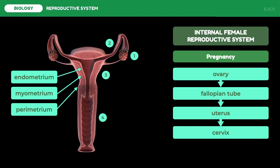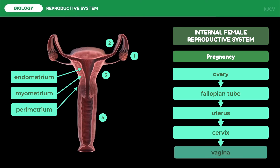The last organ of the internal female reproductive system is the vagina. It is an elastic muscular canal that connects the external reproductive system to the cervix. The primary function of the vagina is for sexual intercourse or coitus — it receives the penis and sperm during sexual intercourse, passes blood during menstruation, and is the passageway of the baby during delivery, hence it is also called the birth canal. When considering female sterilization or permanent contraception, the fallopian tube is tied to prevent the egg cell from being fertilized — this is called tubal ligation.